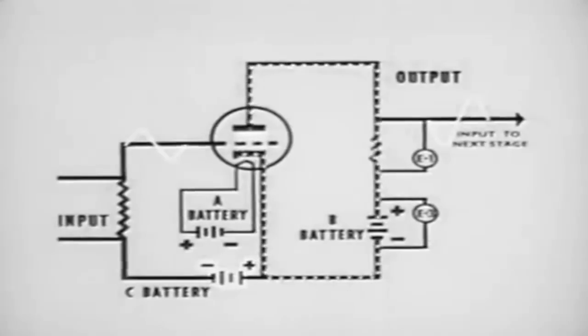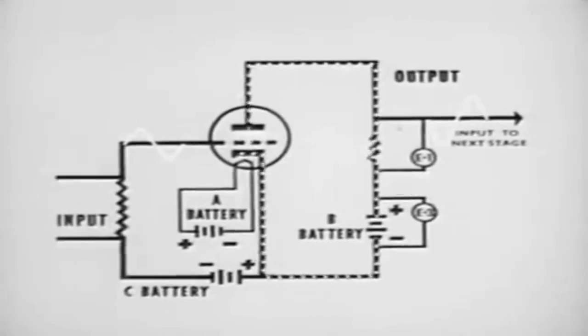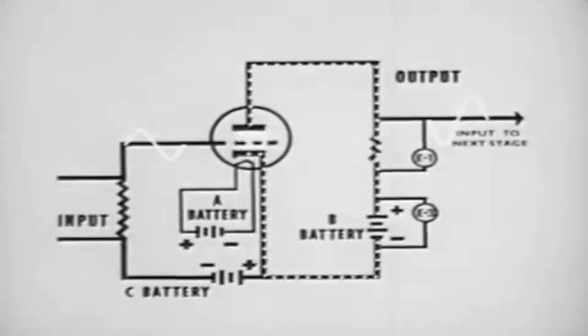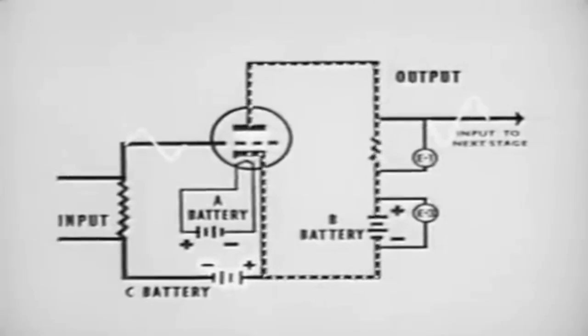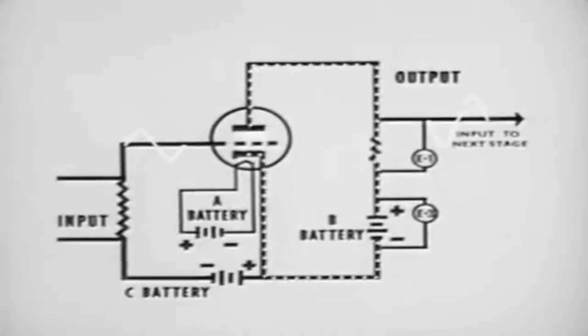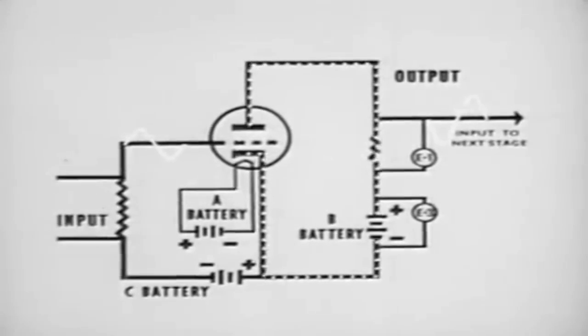The amount of bias placed on the tube determines its operating point. Practically every type of tube manufactured requires different plate voltages as well as bias voltages for particular modes of operation. A good tube manual will give the proper voltages for the condition under which the tube operates best.